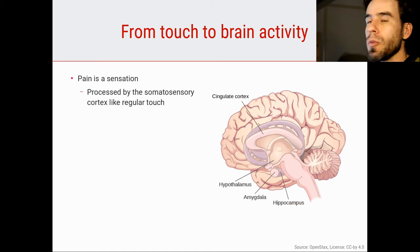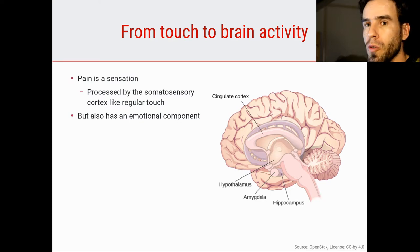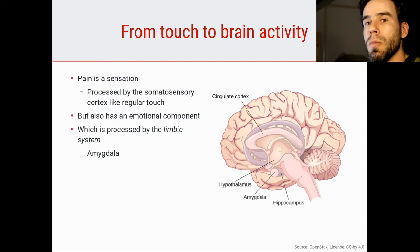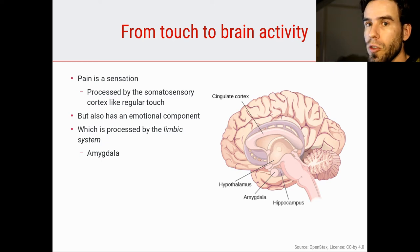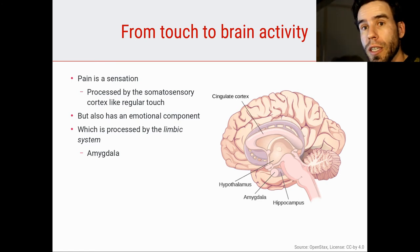Pain is also a sensation, and it is processed in the somatosensory cortex just like other forms of touch. But pain also has a very strong emotional component that normal touch doesn't really have in the same way. Maybe pleasant touch has kind of an emotional component, but most forms of touch are not inherently emotional in the same way that pain is. This link between pain and emotion is reflected by the fact that pain is also processed by the limbic system, and specifically the amygdala.